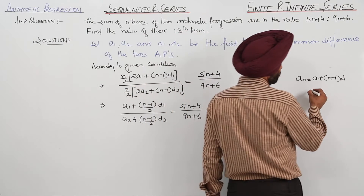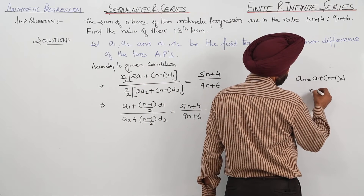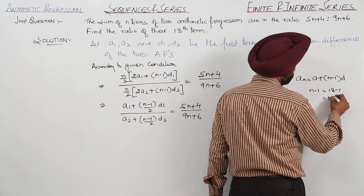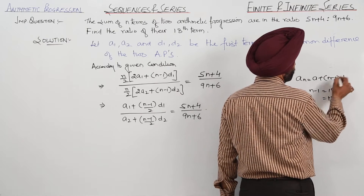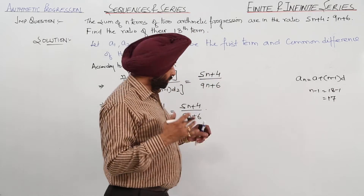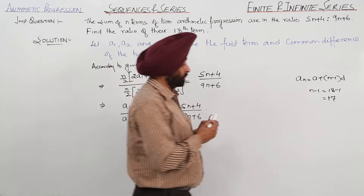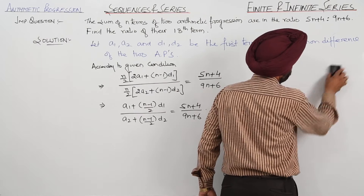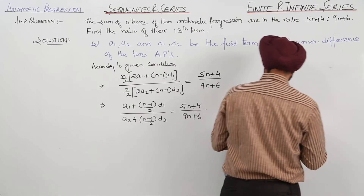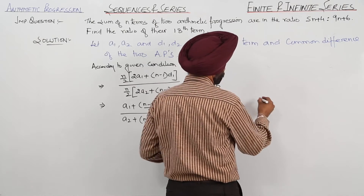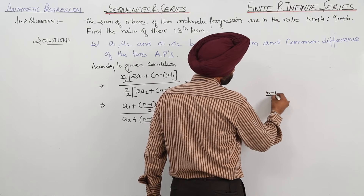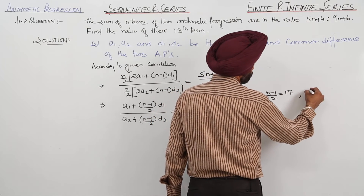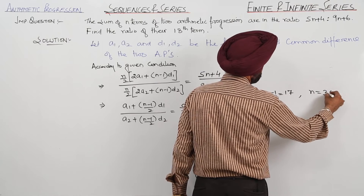We write n minus 1 is equal to 18 minus 1, that is 17, giving us 17d. So n minus 1 upon 2 equals 17, which means n equals 35.